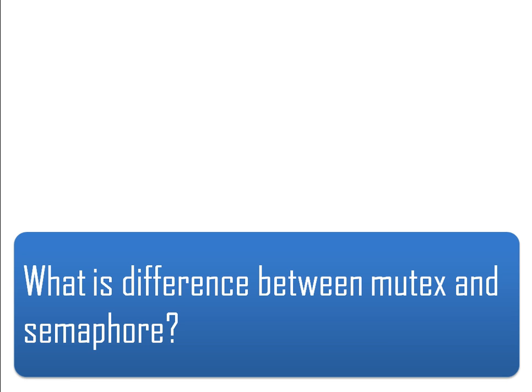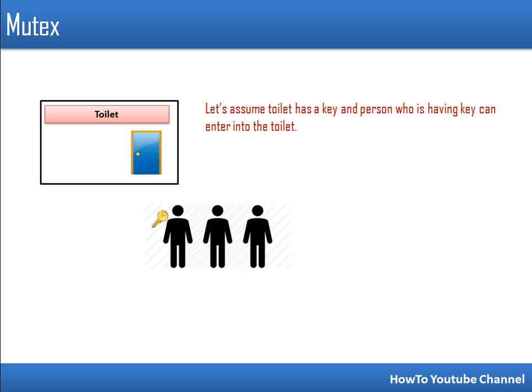In this video I will explain the difference between mutex and semaphore. To show this difference, we are going to take one example — a toilet key example. Let's assume we have a toilet and three persons who want to use it. The door is locked and there is only one key, so at a time only one person can own that key, enter, and occupy the toilet. Once he is done, he will give the key to another person.